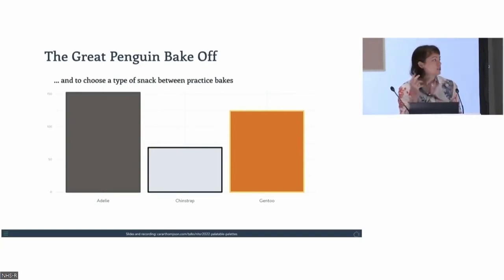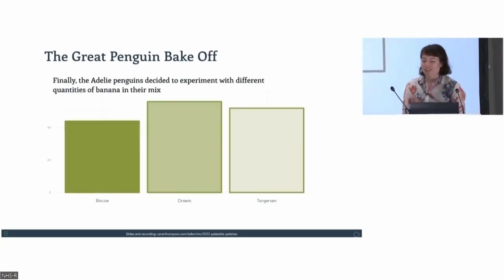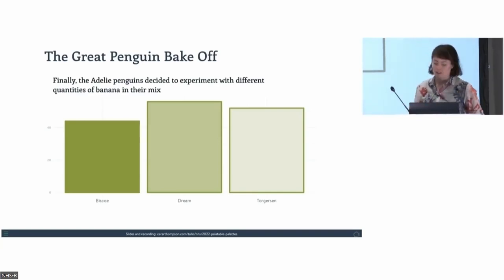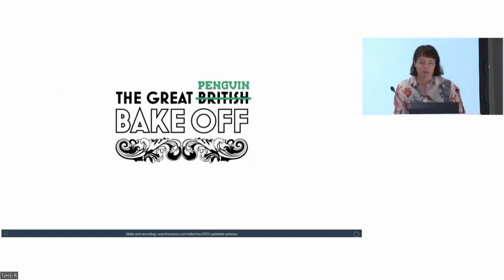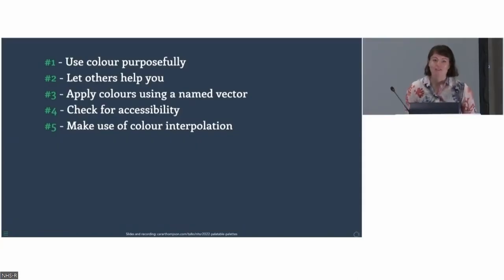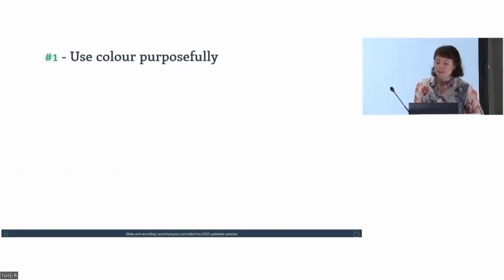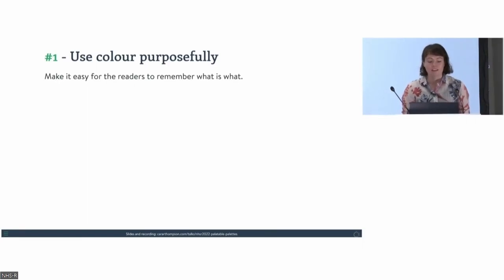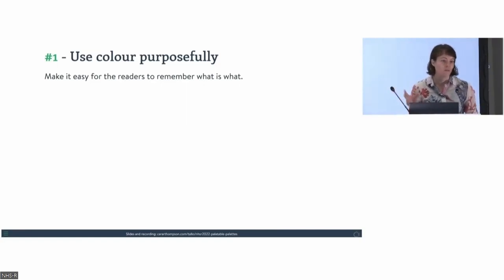They were allowed to invite a different mentor — Paul Hollywood, Mary Berry, or a goodie to have on your side — and to choose a different snack between bakes: sardines, sushi, or fish and chips. The Adélie penguins weren't sure about the ripe banana situation, so they varied the amount of banana in their mix. Now, before you think I've totally lost the plot — pun absolutely intended — all I'm trying to illustrate here is Tip 1: use colour purposefully.